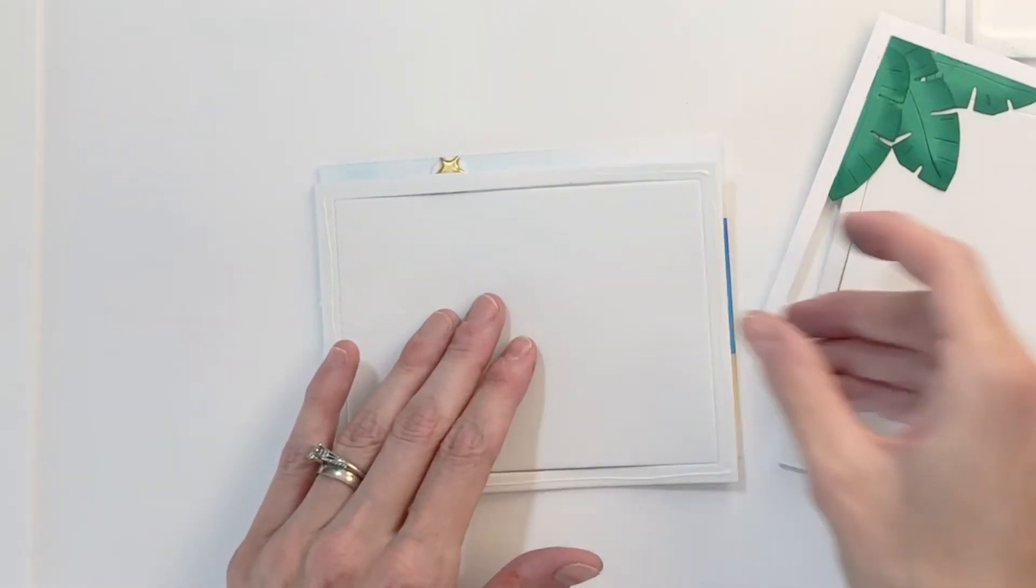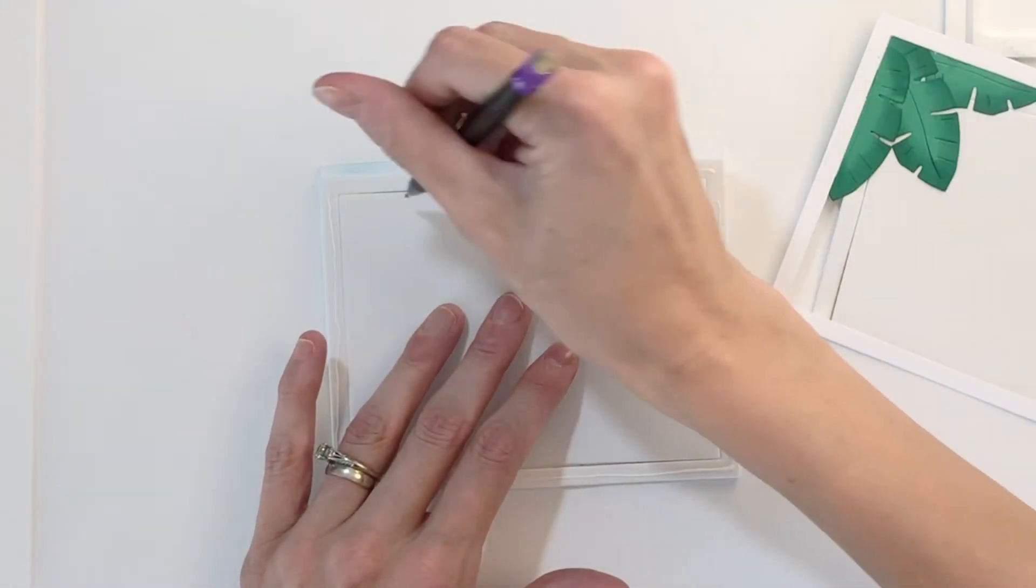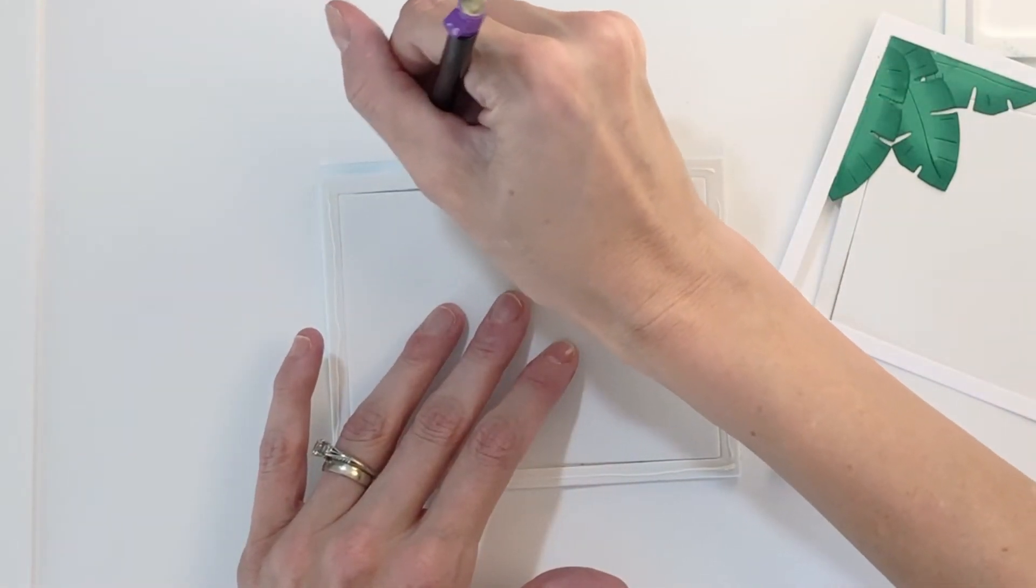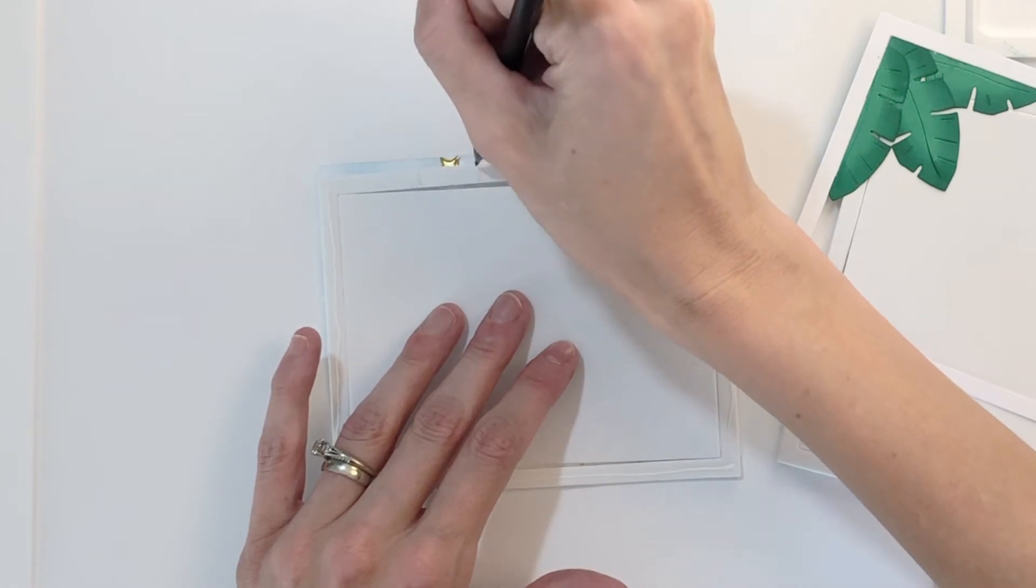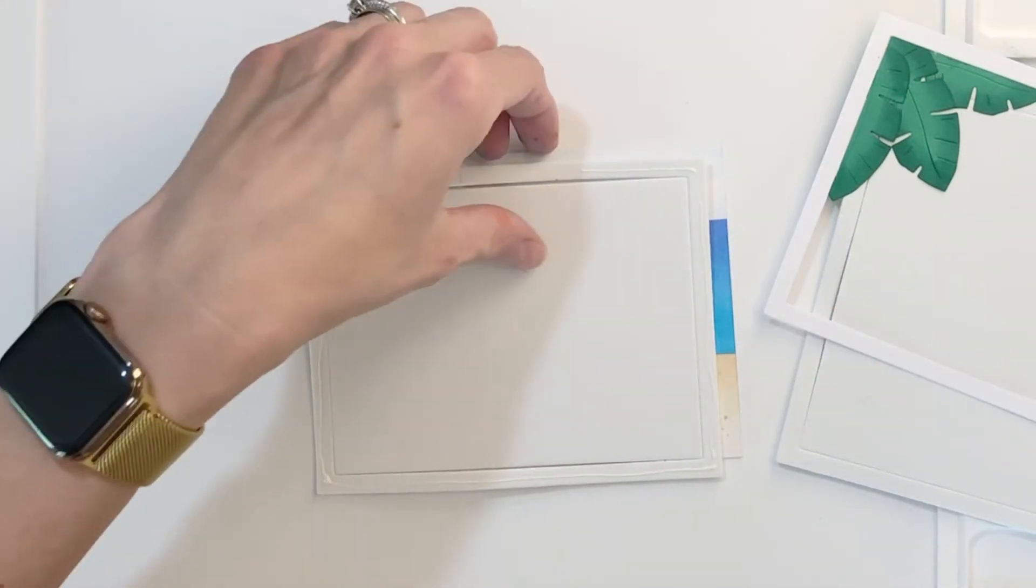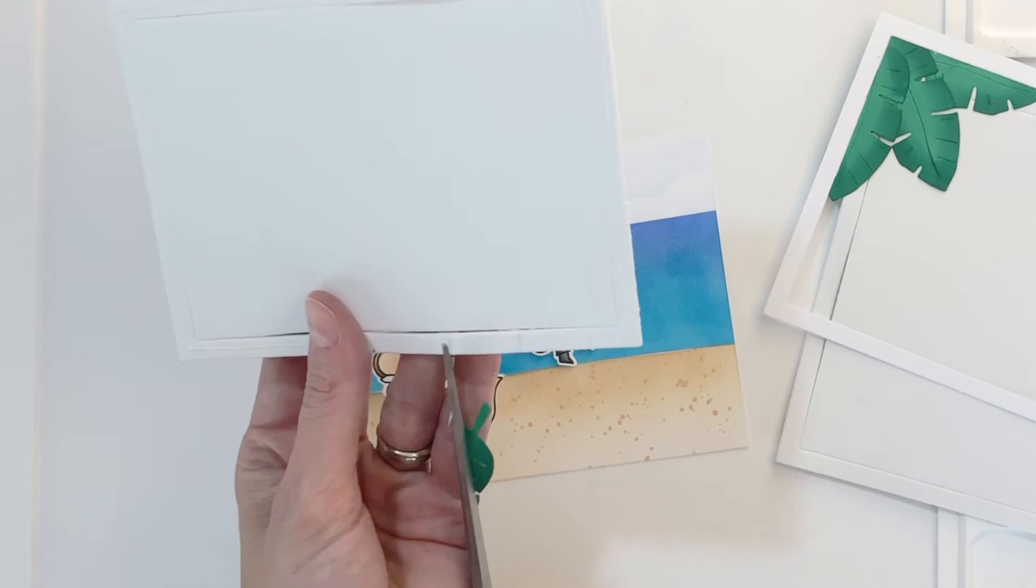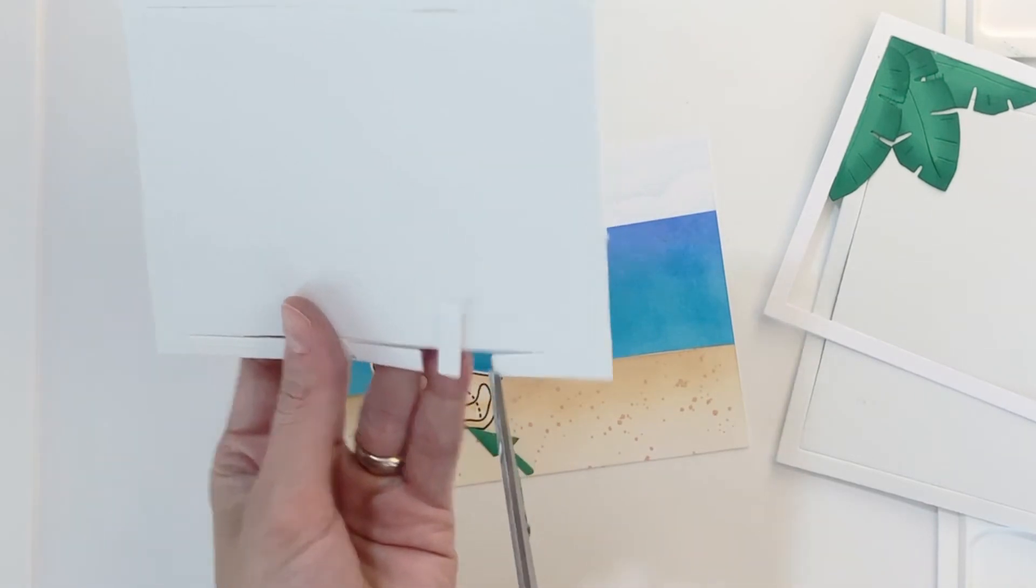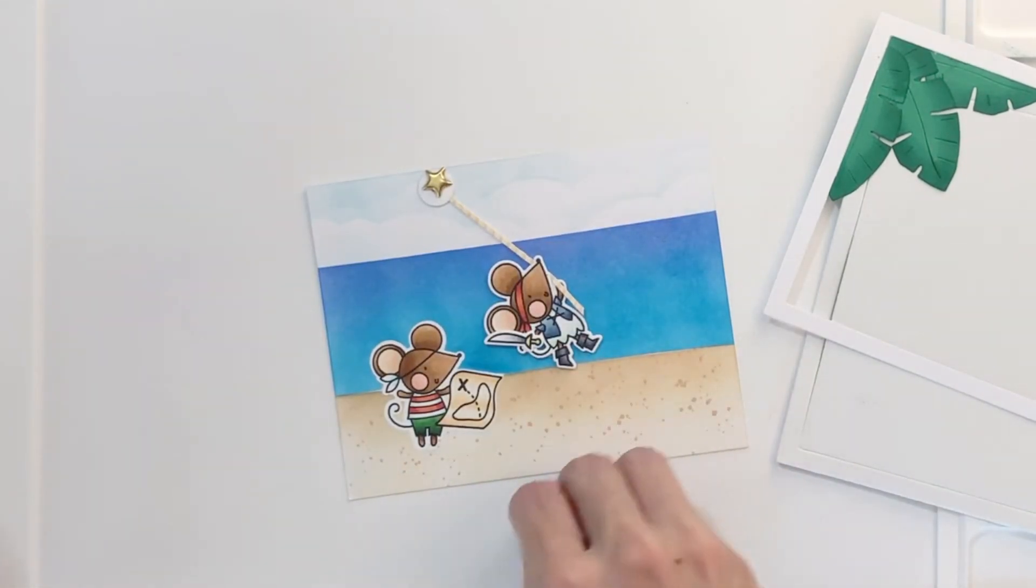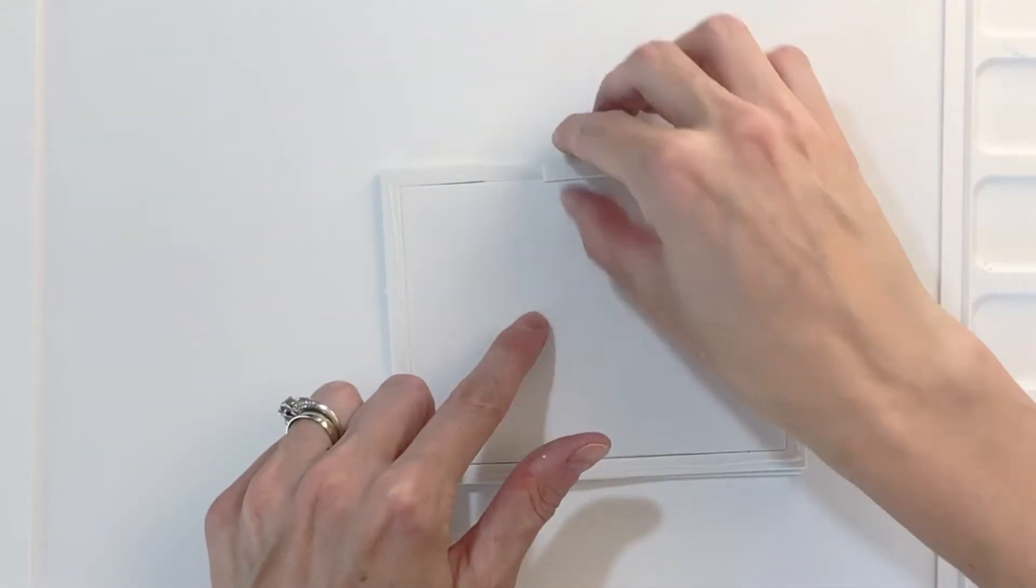I went ahead and die cut with that same frame die from the Rainbow Panel die set two A2 panels of white craft foam and I left the inside negative piece just to keep those frames nice and square. And now I'm taking these frames and placing them over that background panel right where that brad is so I can cut out and remove that section where the frame is overlapping with the brad.